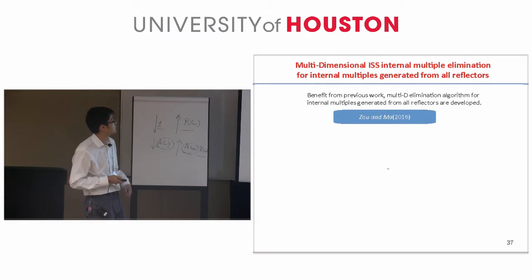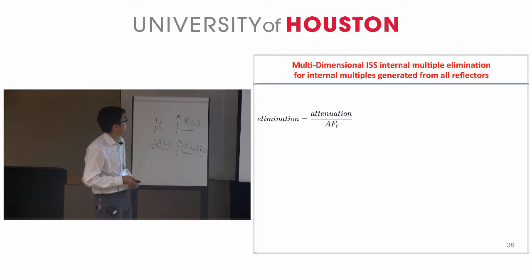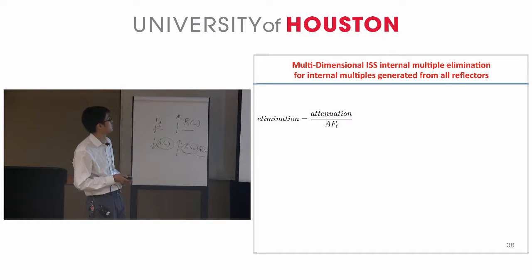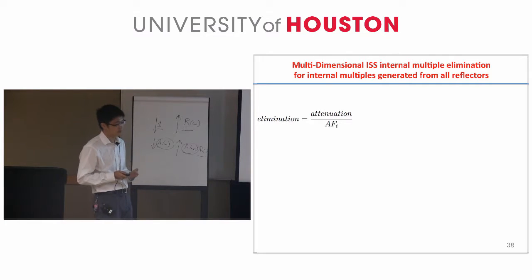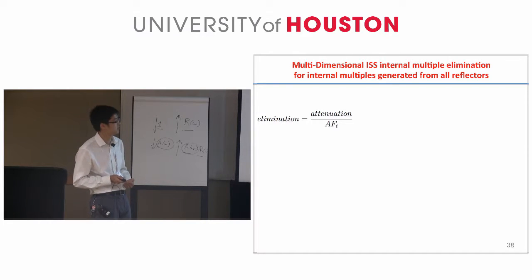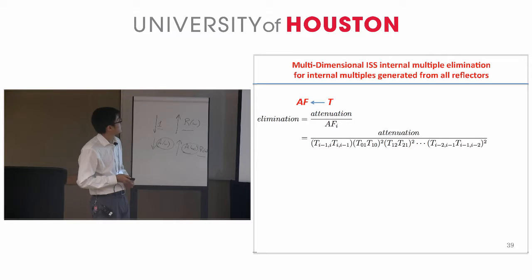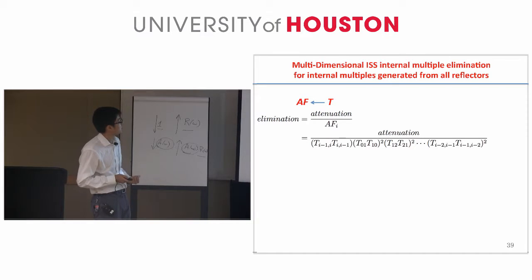In this work, I will show the multi-dimensional elimination algorithm for internal multiples generated from all reflectors. Because the attenuation factor is the difference between elimination and attenuation, elimination equals attenuation divided by the attenuation factor. Notice that the attenuation factor is not a single number — for different internal multiples generated by different reflectors, the attenuation factors are different. The attenuation factors are related to the transmission coefficients, and we arrange the attenuation factor so we can use higher order terms of data to remove it.